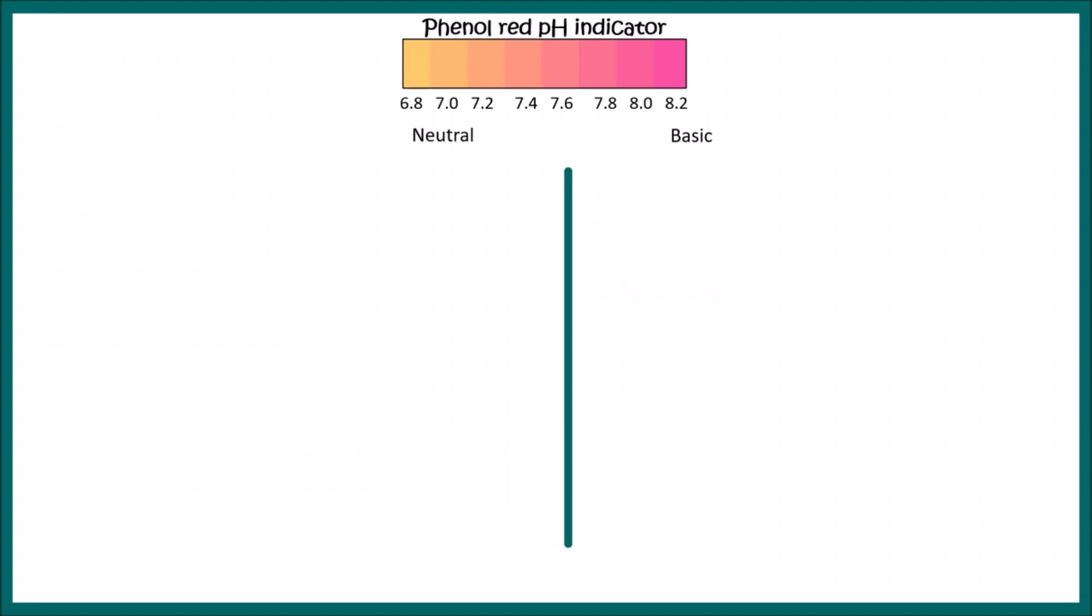This particular patch has a pH indicator known as phenol red. When it is near neutral, the color is yellow. That is why the strip is generally yellow.